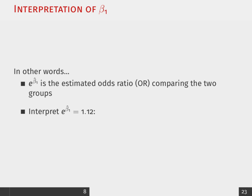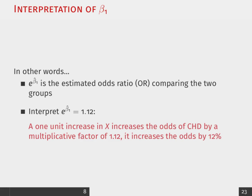So, what we can say, then, is that a one unit increase in x increases the odds, again, not log odds, odds of CHD by a multiplicative factor of 1.12. So, it's increasing the odds by about 12%.